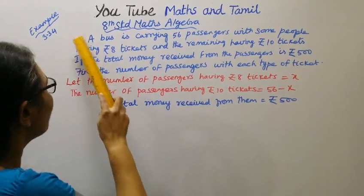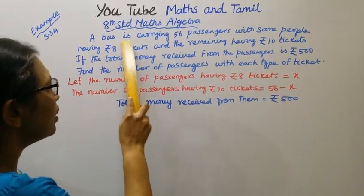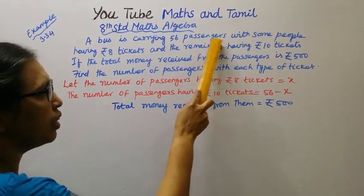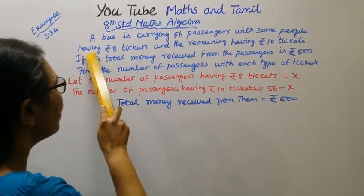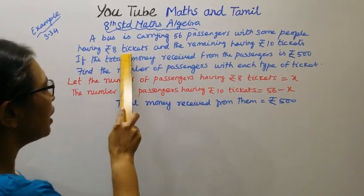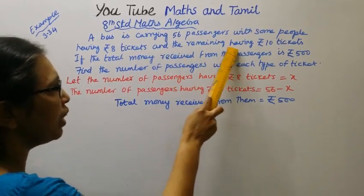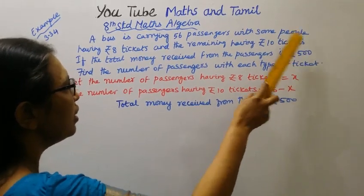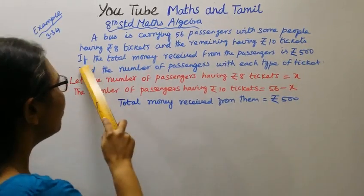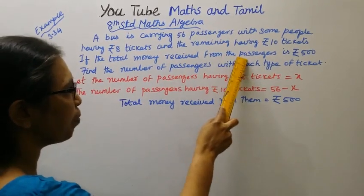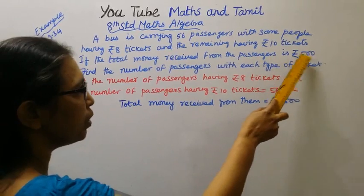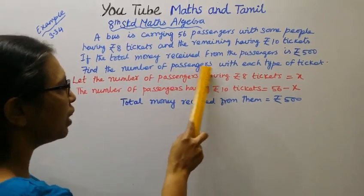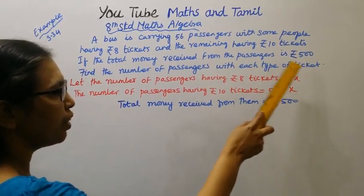Example 3.34: A bus is carrying 56 passengers, with some people having Rs. 8 tickets and the remaining having Rs. 10 tickets. If the total money received from the passengers is Rs. 500, find the number of passengers with each type of ticket.